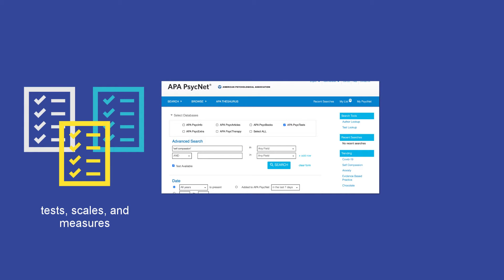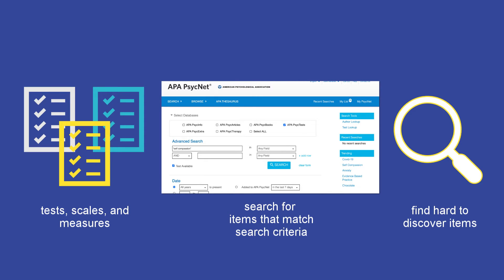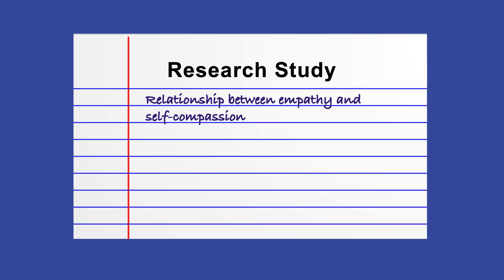APA PsychTest indexing allows you to search for and discover tests and measures that match your search criteria. As a result, this database makes it possible to find tests that were previously lost in the literature and may be hard to discover using other research tools. Let's say that we're about to begin a research study looking at the relationship between empathy and self-compassion.